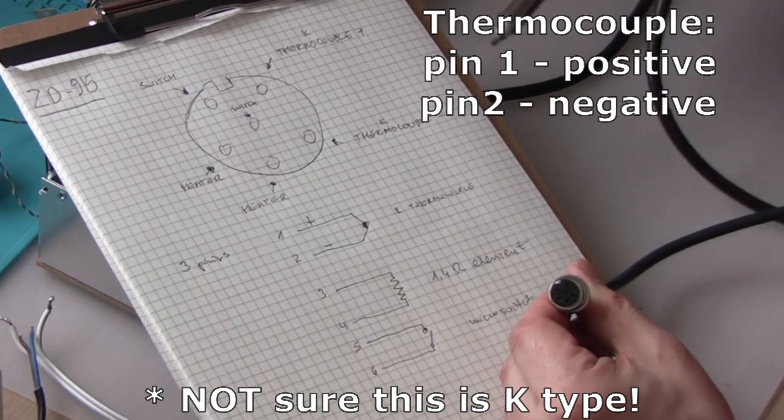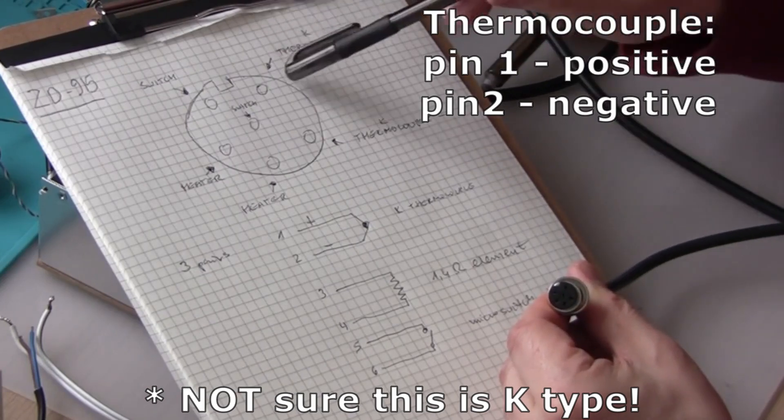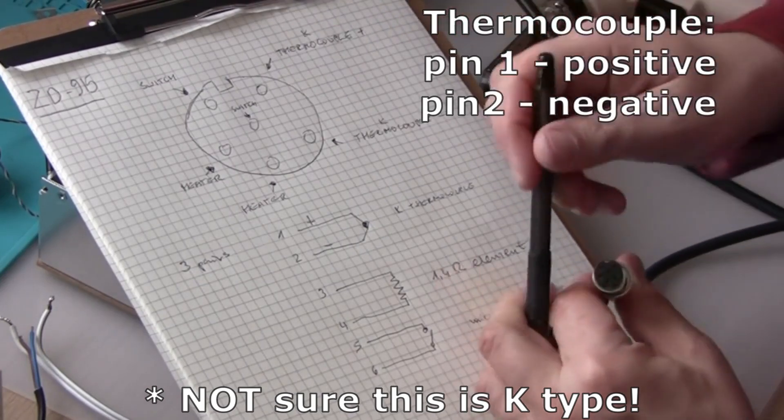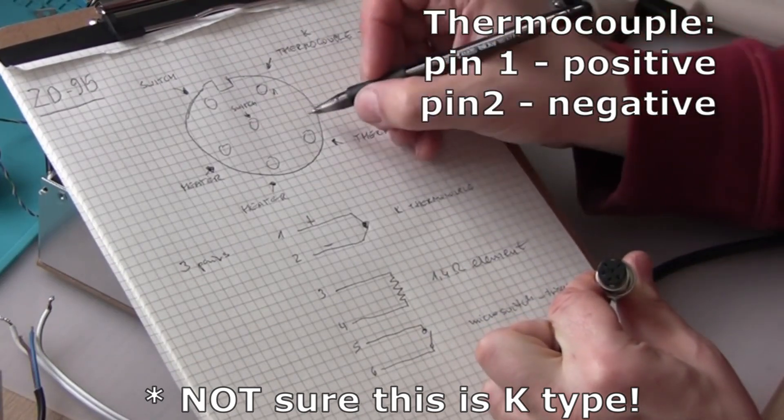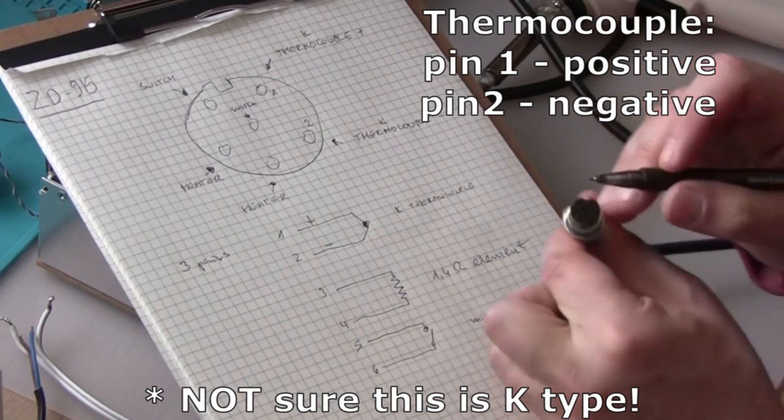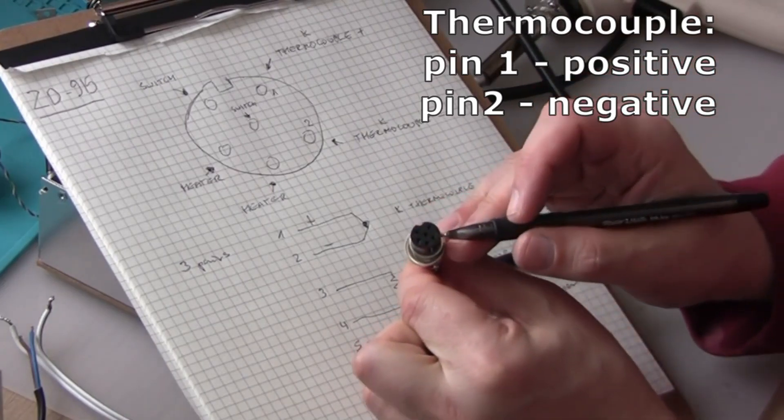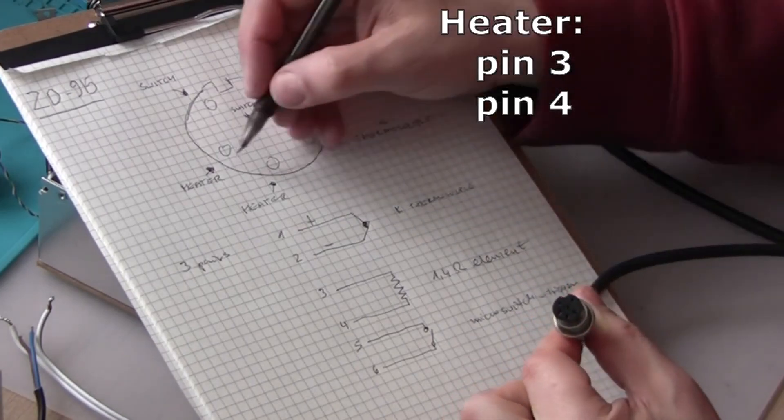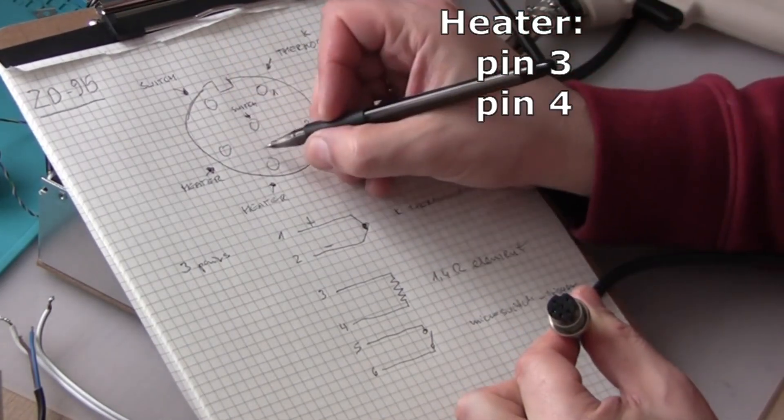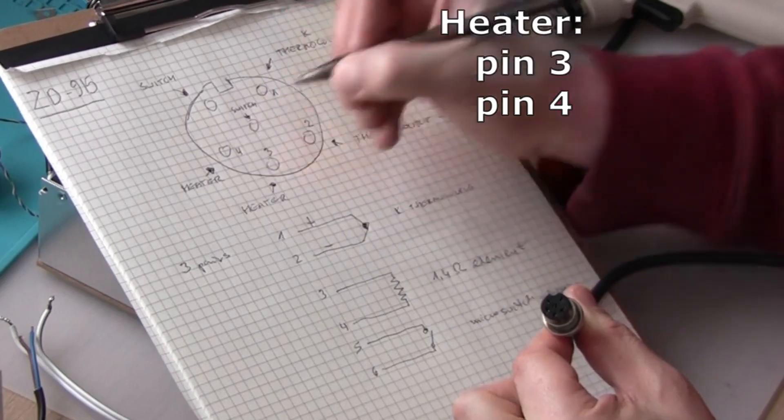It is K type thermocouple. There is a plus on pin number one. There is a minus of the thermocouple on pin number two, so plus and minus. Then we have a heating element on pins three and four.